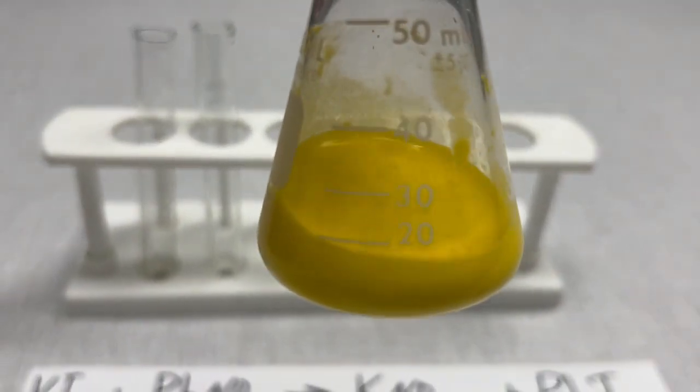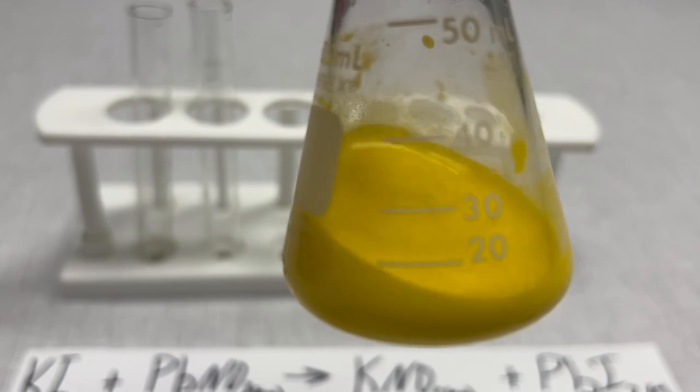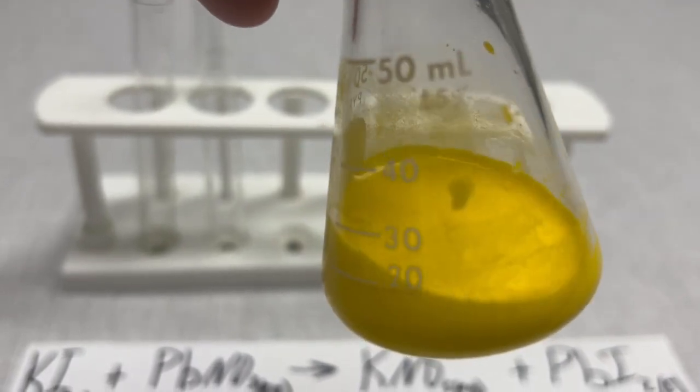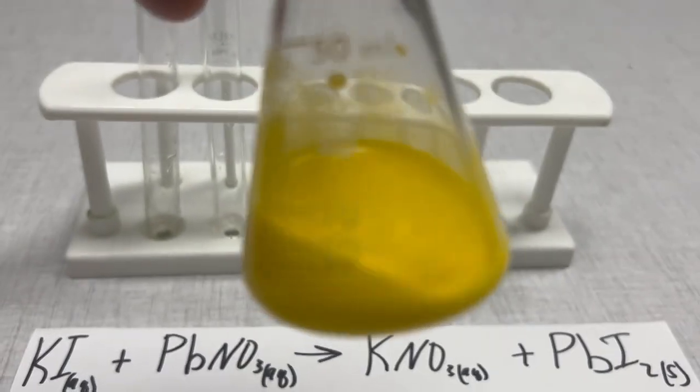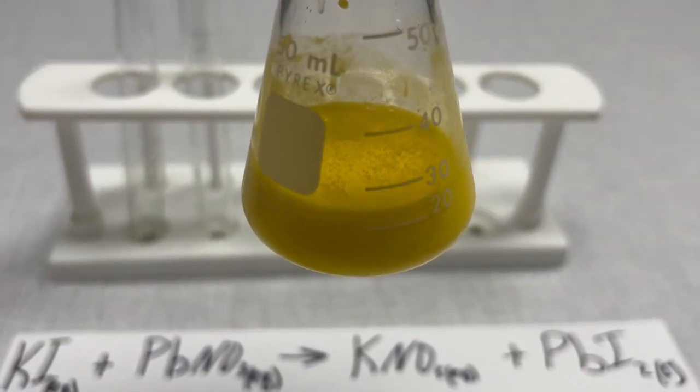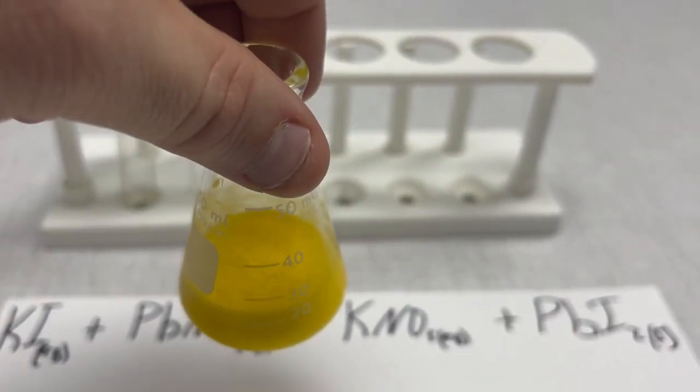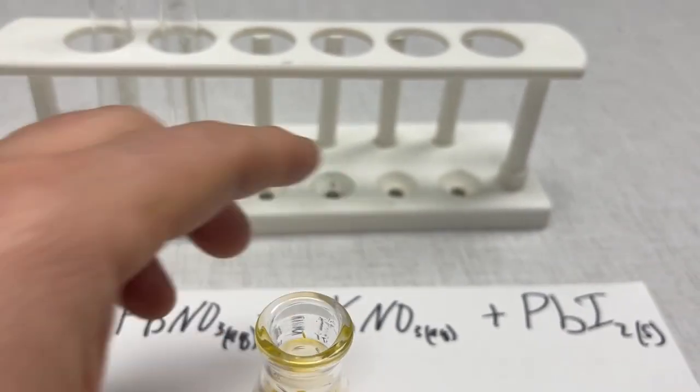And if I swirl it you can almost see that the yellow is actually a solid. It is sticking to the side of the container. There's still liquid in here but there's like a really fine powdered solid in here, and I'm going to leave it sit and maybe we'll actually see it settle out as we talk about some additional things over here.